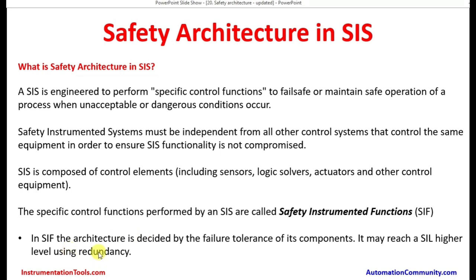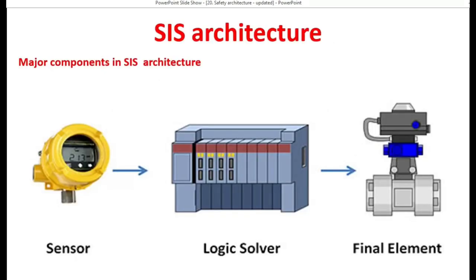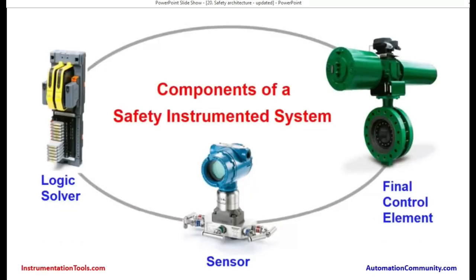Hence, if the architecture is decided by the failure tolerance of its components, it may reach a higher SIL level during redundancy. We have seen about redundancy and voting principles in earlier presentations. There are different combinations by which redundancy can be achieved, depending upon the safety integrity level. These are also different types of modules — control modules in the logic solver and the final element. This is one type of valve, known as a butterfly valve, and this is a sensor taking a process measurement — it can be flow, pressure, or temperature.